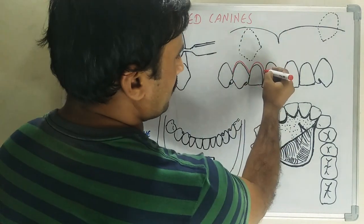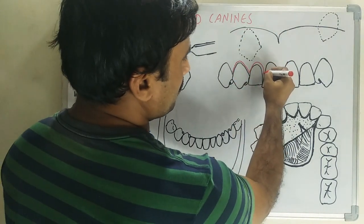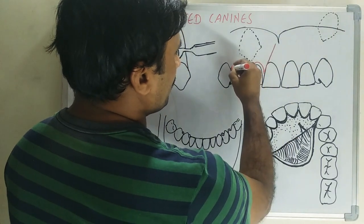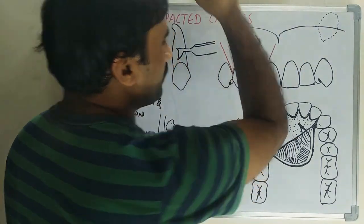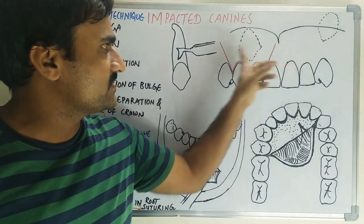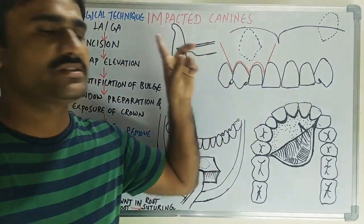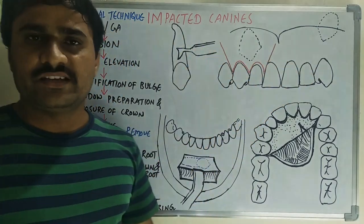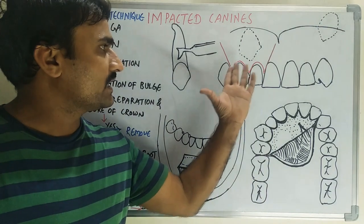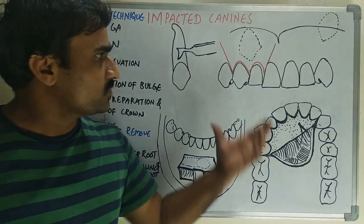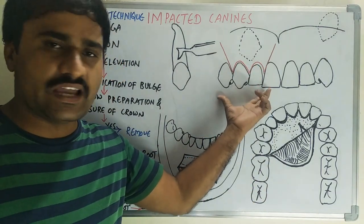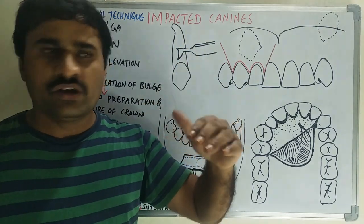You also incorporate releasing incisions — an anterior releasing incision and a posterior releasing incision — along with the crevicular incisions. This is the incision design used when the maxillary canine is located low in the buccal vestibule.